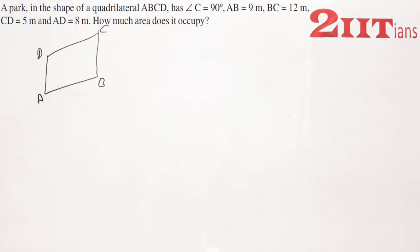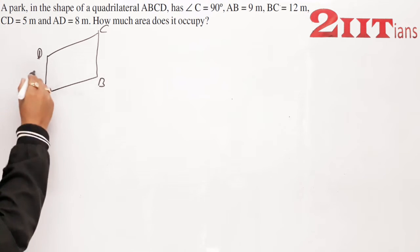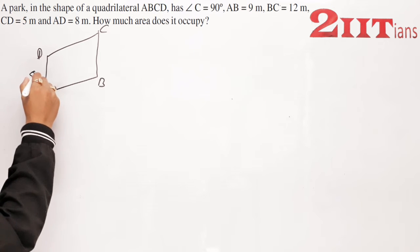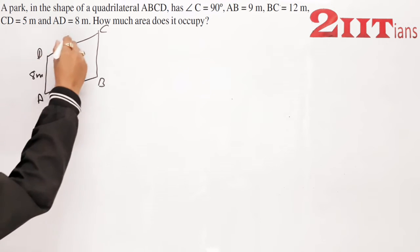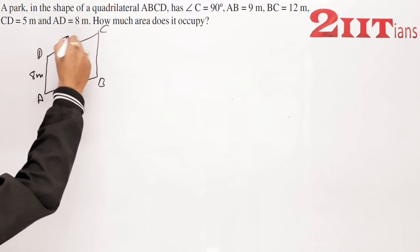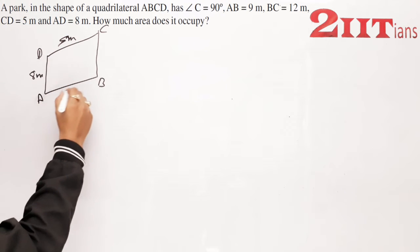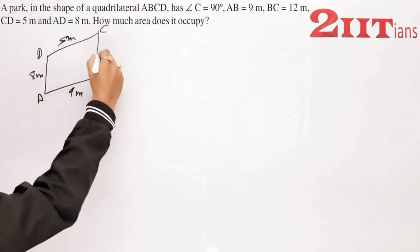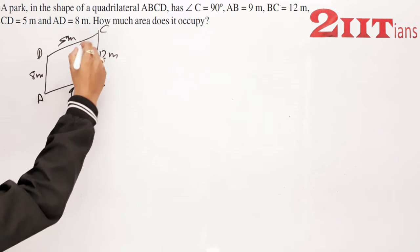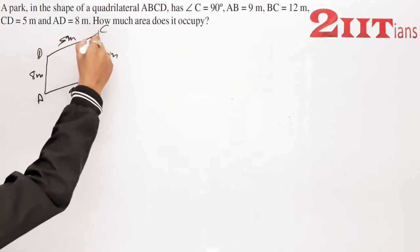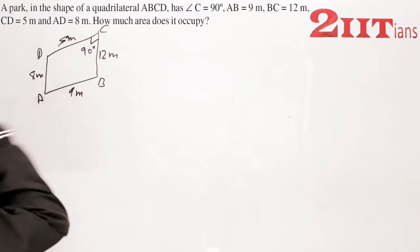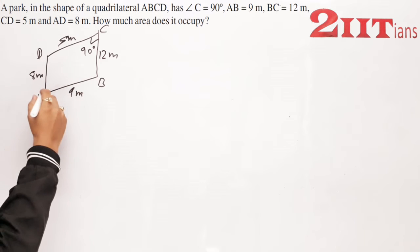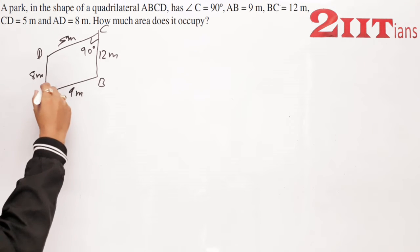अब देखिए, AD 8 meters दे रखा है, CD 5 meters है, AB 9 meters है, और BC 12 meters है। Angle C हमारा 90 degree है।